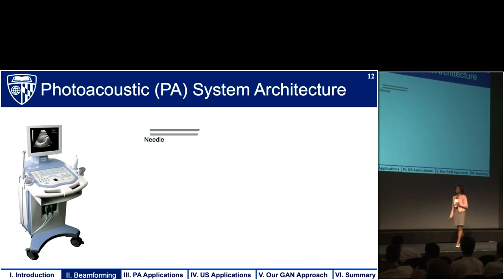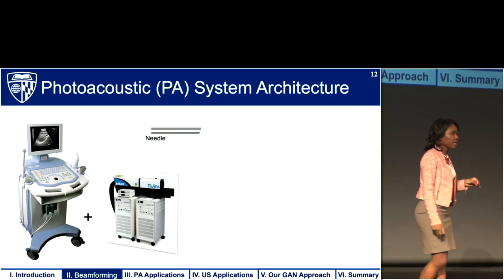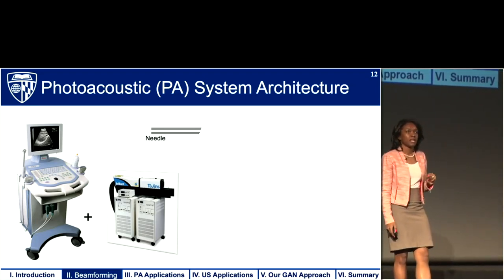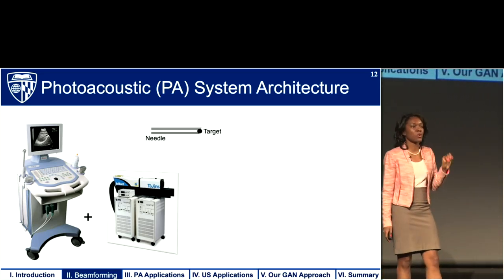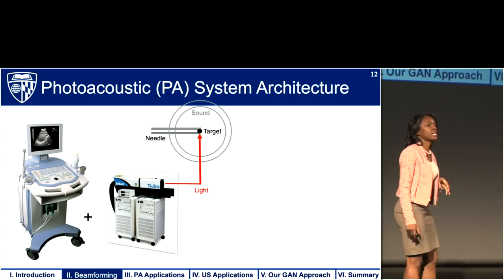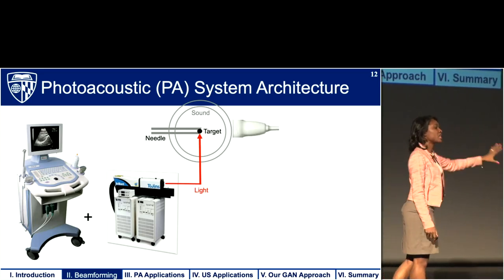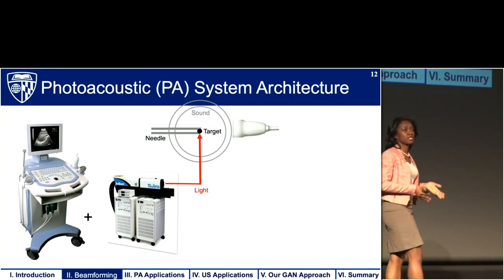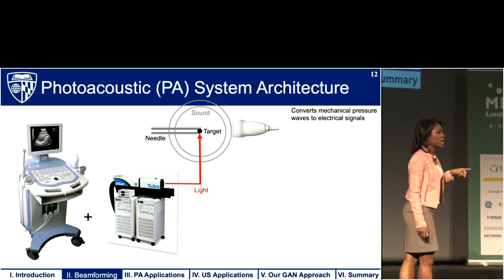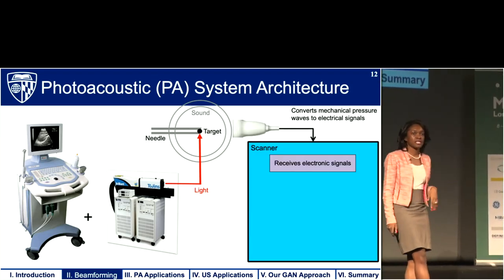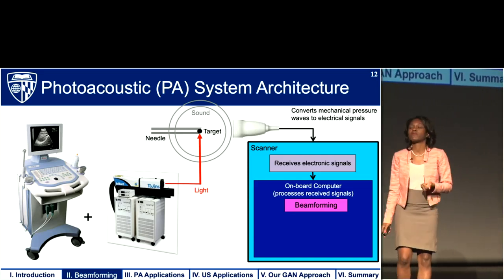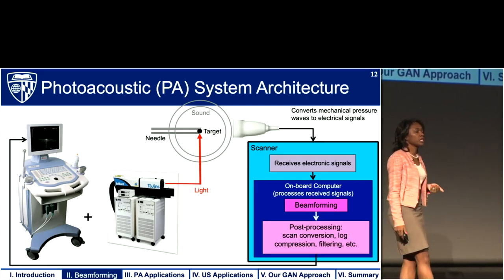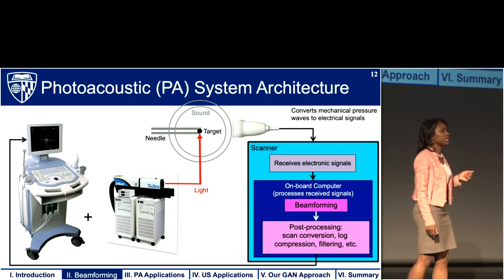Photoacoustic imaging is related to ultrasound in that we take the same hardware used for ultrasound and add a laser to it, creating a photoacoustic imaging system. If we want to image a needle tip that becomes our target, we transmit light toward it, which absorbs the light, undergoes thermal expansion, and generates a sound wave detected with conventional ultrasound transducers. Once detected, all of the signal processing is very similar to ultrasound — the piezoelectric elements convert the mechanical pressure waves into electrical signals sent to the scanner, and the first step in that processing chain is again the critical beamforming step.